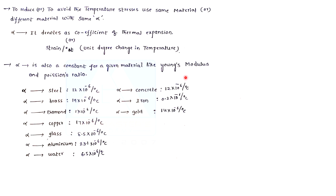Each material, like copper, brass, steel, iron — these have different coefficients of expansion. Depending upon the type of material, the coefficient of thermal expansion, the alpha value, is different, and there is a difference between these two materials.